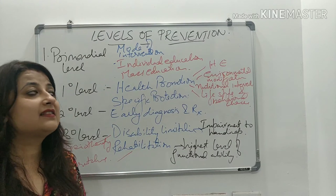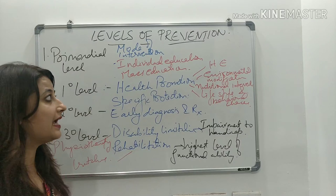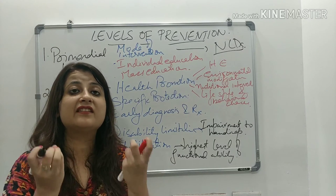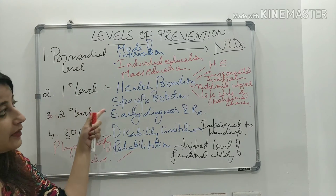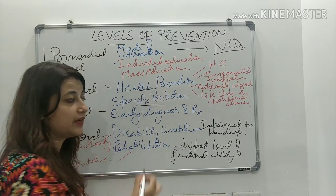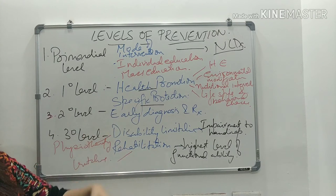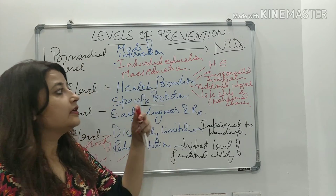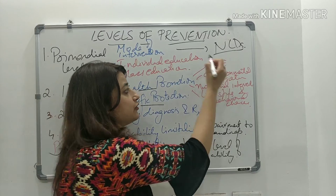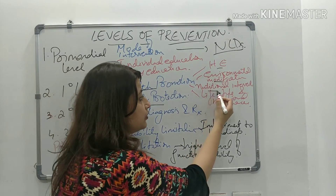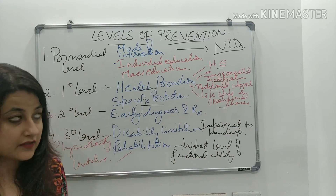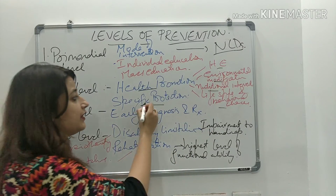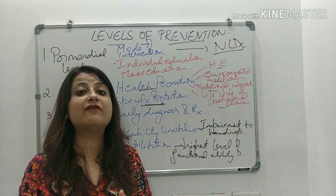An important MCQ: for NCDs, which level of prevention is mostly applied? For NCDs, mostly we do primordial level of prevention — we want to prevent the emergence of risk factors. For primary level, the modes of intervention are health promotion and specific protection. Health promotion is the process of enabling people to lead a healthy life through health education, environmental modifications, nutrition interventions, and lifestyle and behavioral changes. Specific protection is when we specifically focus — like vaccination.